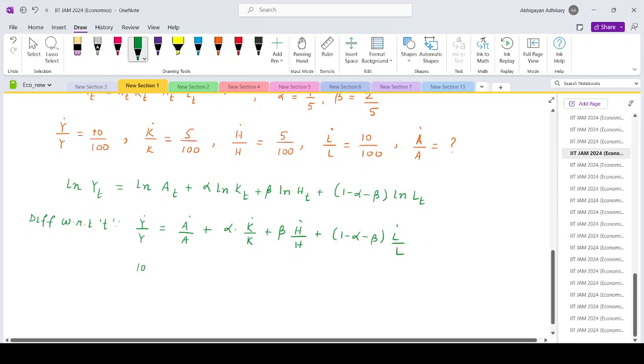So replacing the values, this will be 10 by 100 equals a dot by a plus alpha, which is 1 upon 5, times 5 upon 100, plus beta, which is 2 upon 5, times 5 upon 100.